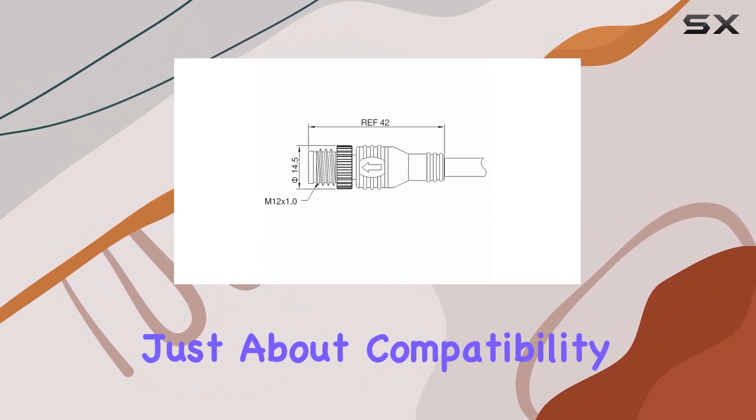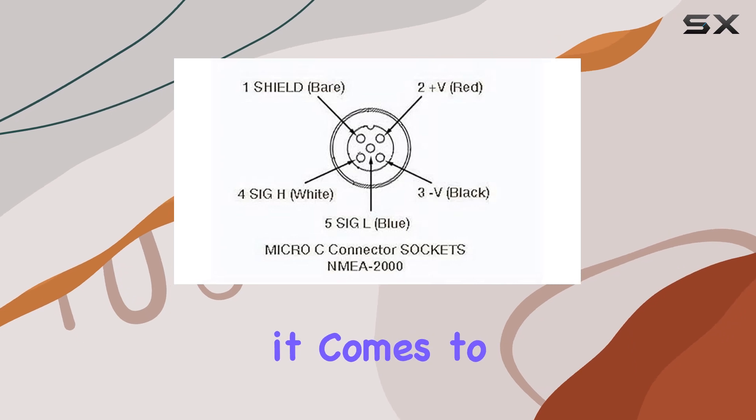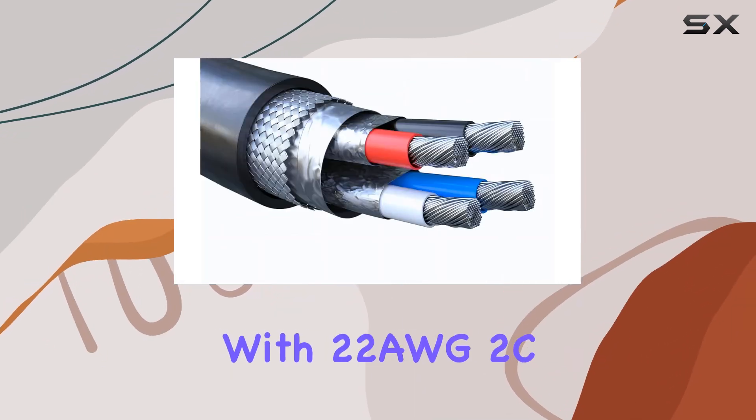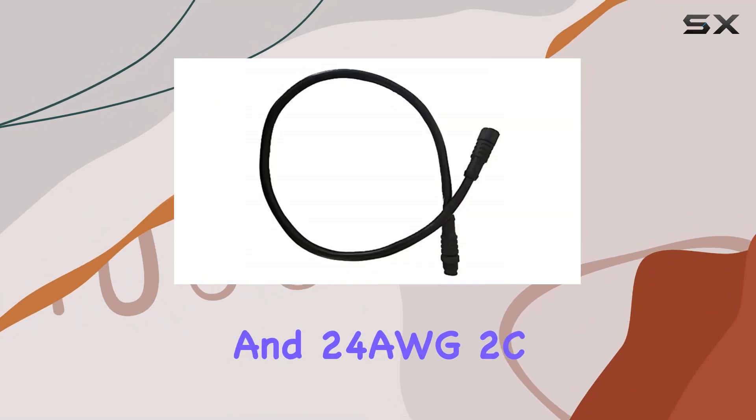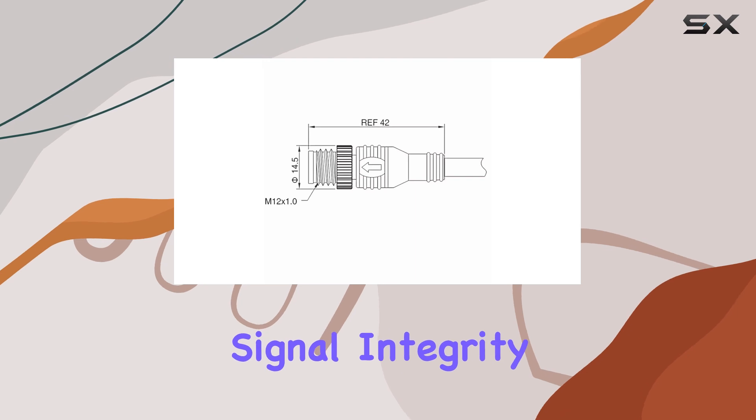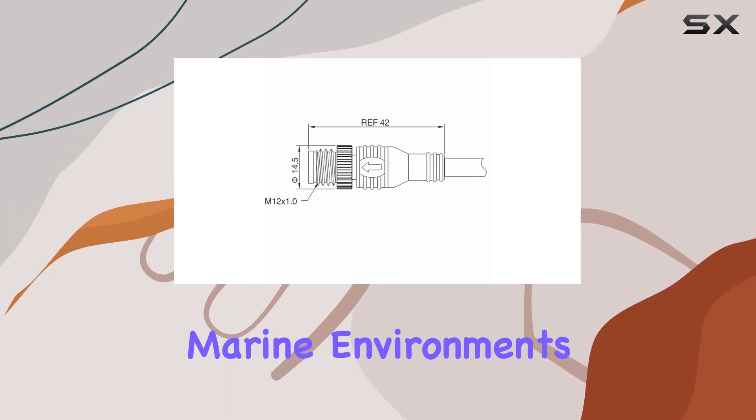But it's not just about compatibility. This cable means business when it comes to performance. Sporting a black-shielded design with 22 AWG-2C and 24 AWG-2C wiring, it's built to reduce interference and maintain signal integrity even in challenging marine environments.